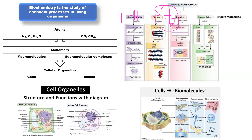A molecule of a compound is when you have different elements joined together. For example, hydrogen plus oxygen produces water — H₂O. Since hydrogen and oxygen are not the same element, this is called a molecule of a compound. So we have two types of molecules: molecule of an element and molecule of a compound.